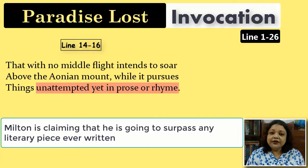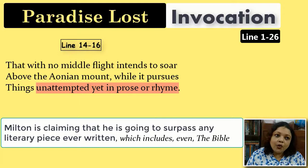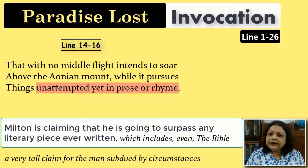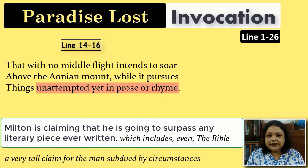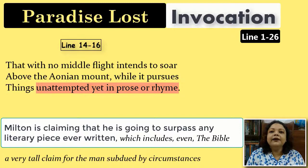Milton claims he will write something unattempted yet in prose or rhyme — surpassing not just every poetry ever written but every prose, every literary thing in the history of mankind, including the Bible and all scriptures. That is a very tall claim, made by a man who is politically powerless, in hiding, and losing his sight. This man, totally subdued and defeated by circumstances, is claiming to write something unprecedented — the claim of a man inspired by the Renaissance spirit.